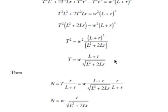Checking the units: tension t should be a force, and it equals weight W (a force) times (L plus R), which is a distance, divided by the square root of (L² plus 2LR), which is distance squared. So we have distance over the square root of distance squared, which is distance over distance — dimensionless. Therefore t equals weight, and the units work.